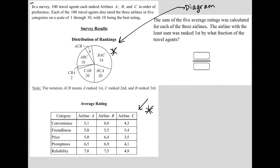So the information says in a survey, 100 travel agents each ranked airlines A, B and C in order of preference. Each of the 100 travel agents also rated the three airlines in five categories on a scale of one through 10, with 10 being the best rating.